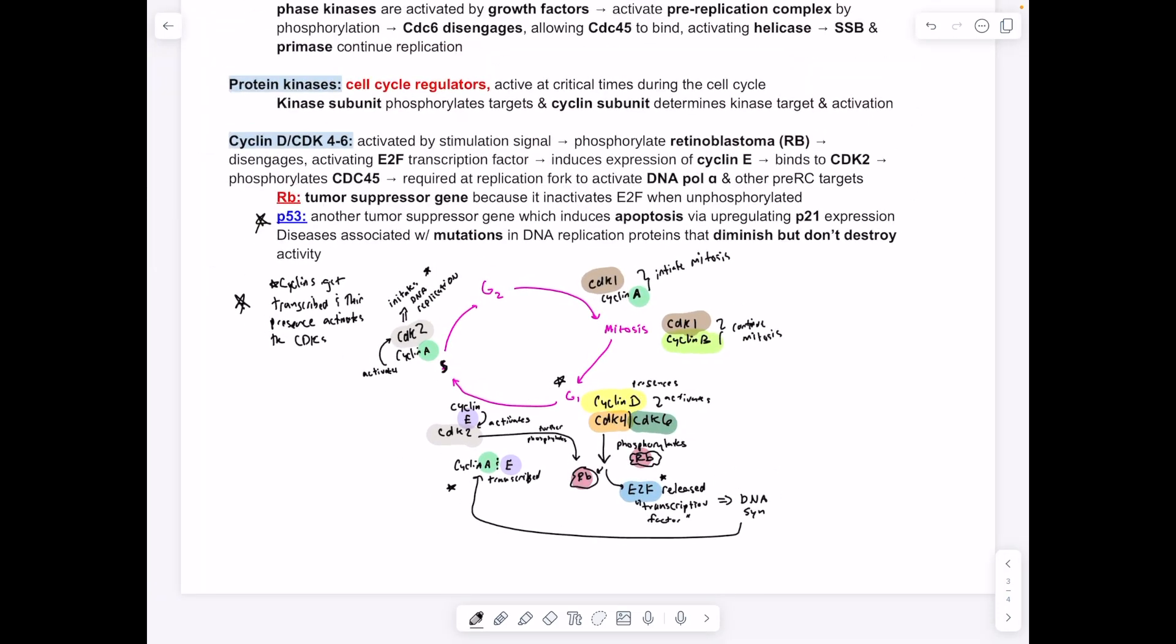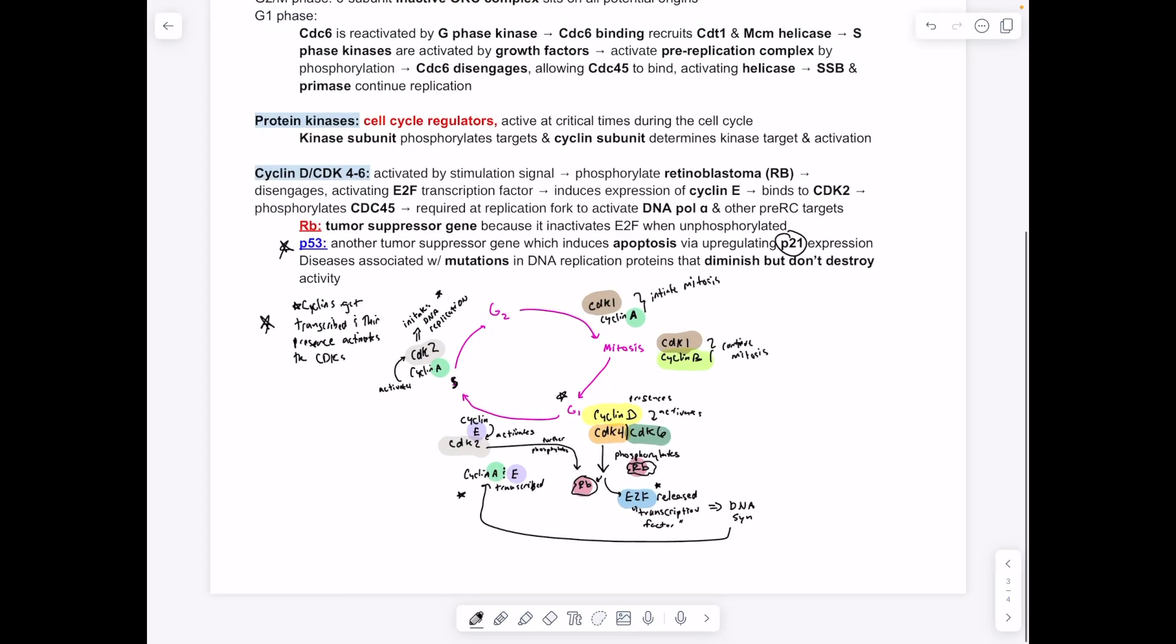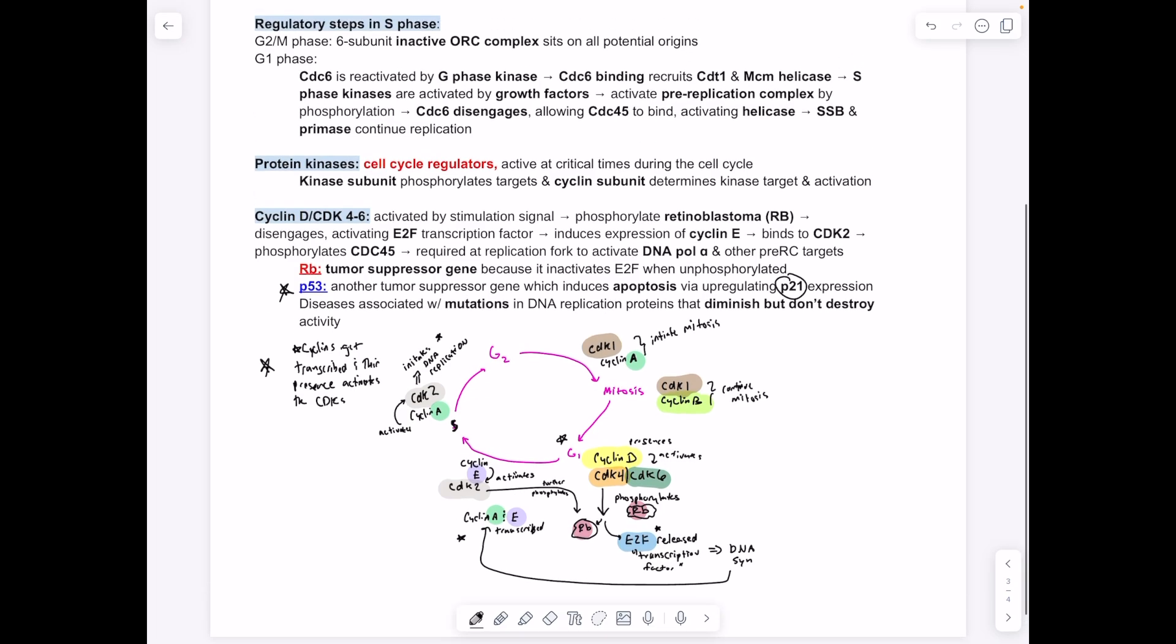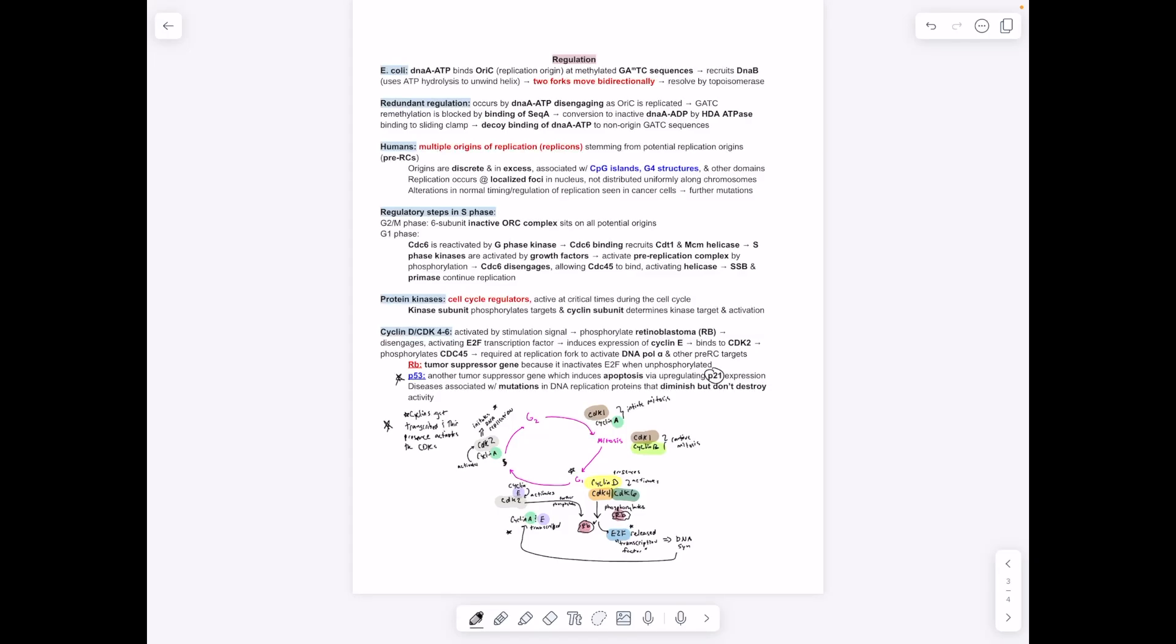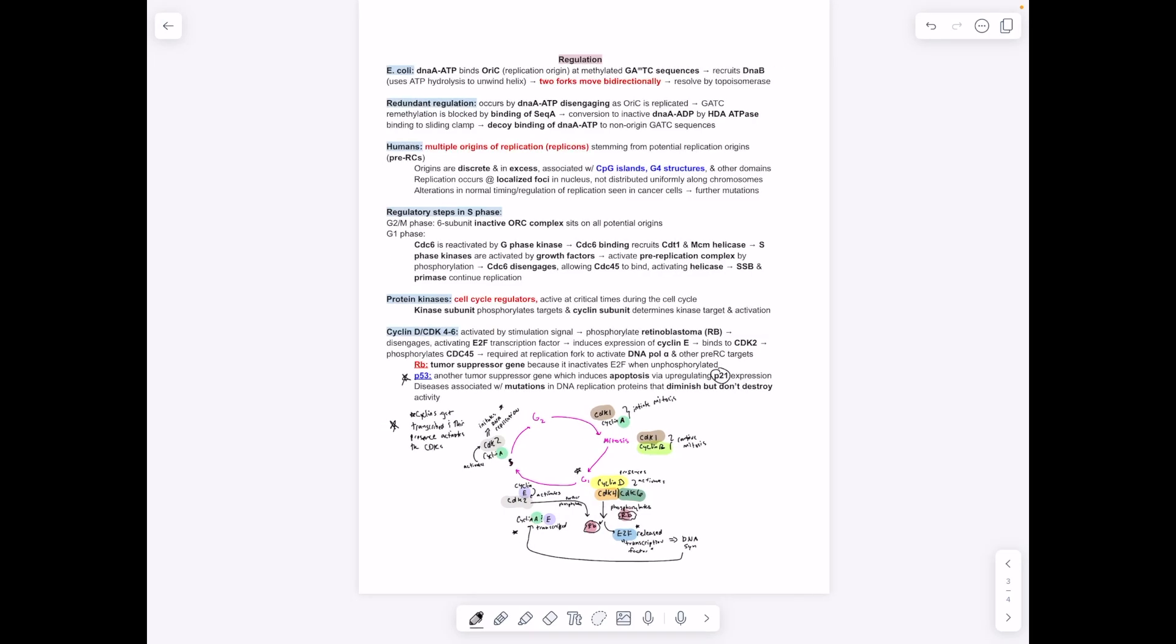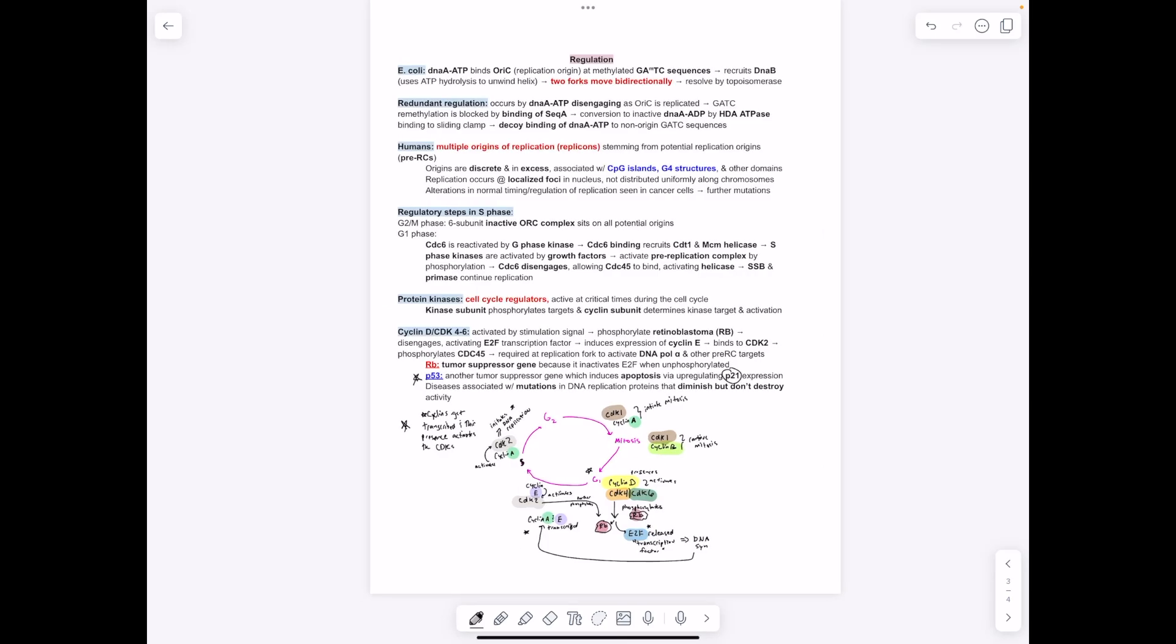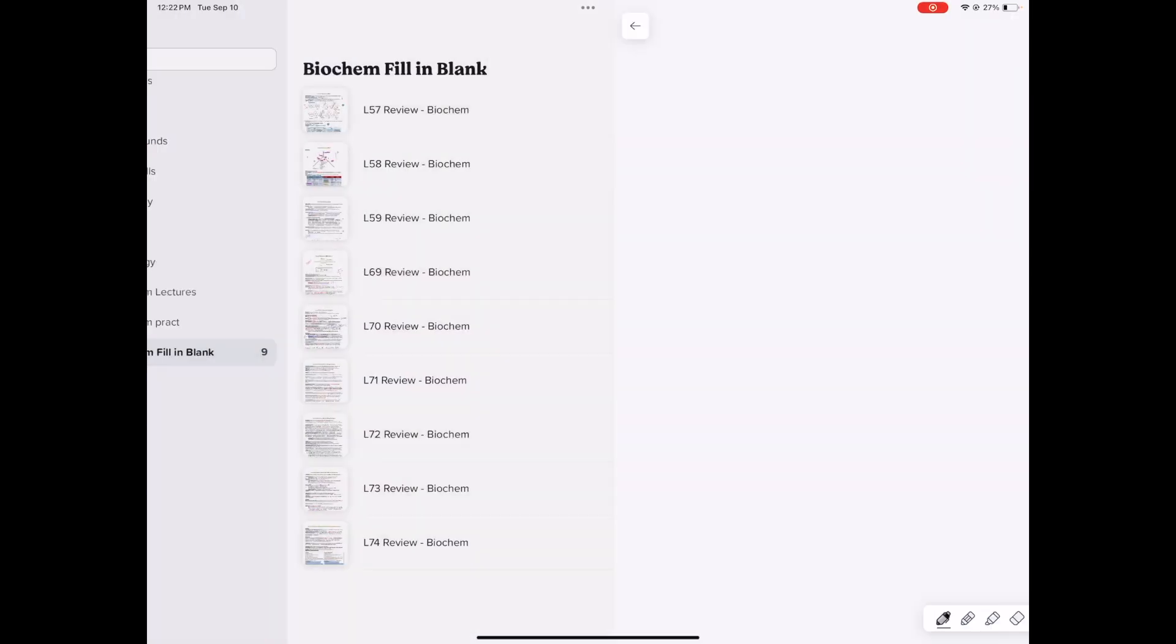Then, of course, we have P53, which is another tumor suppressor gene that can pause any further transcription and induce apoptosis by upregulating P21. Basically, if you have a bunch of DNA damage, then you're going to have P53 expressed more to say, hey, pause, something's wrong. You can allow repair to occur if possible, but we don't want damaged DNA to be spread through mitosis, or significant expression can allow the cell to undergo apoptosis.